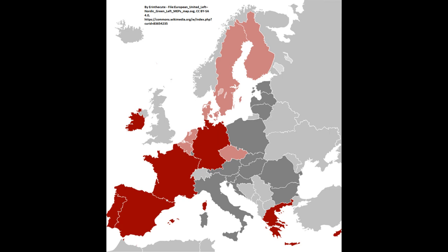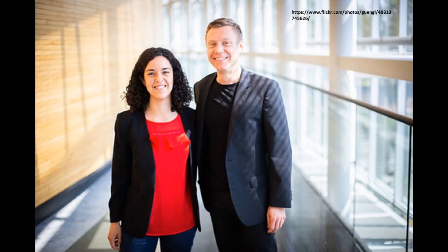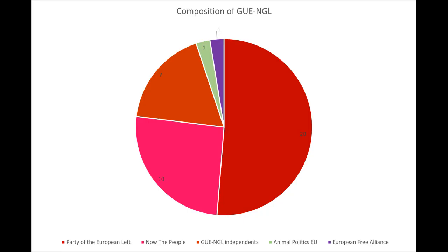The national parties present in the group include the Progressive Workers Party of Cyprus, La France Insoumise of France, the Left of Germany, Syriza of Greece, Independents for Change from Ireland, Left Bloc and the Communist Party of Portugal, and Podemos and the United Left of Spain. It is headed by Manon Aubry from France and Martin Schirdewan from Germany. The composition is fairly complicated due to members having dueling member statuses — 20 MEPs are part of the Party of the European Left, 10 are members of Now the People, 7 are independent, 1 is a member of Animal Politics EU, and 1 is a member of the European Free Alliance.